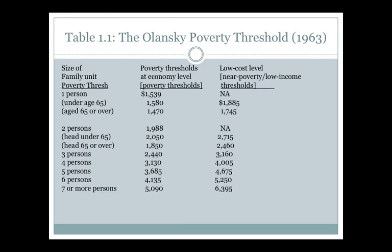The threshold goes up as you have more people in the household. Three persons would be $2,440 and four persons $3,130, and so on. These are really quite low thresholds, even accounting for 1963 dollar values.